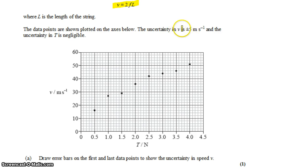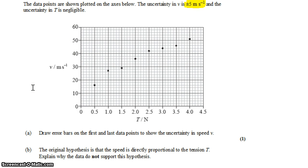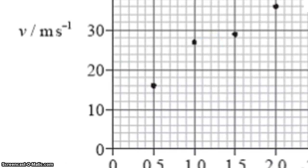We're told that the uncertainty in velocity is plus or minus 5 meters per second, and the uncertainty in tension is negligible. The first thing we need to do is draw error bars on the first and last points to show the uncertainty for V. We're told it's plus or minus 5 meters per second, so we just need to add plus or minus 5 meters per second to each one of these points. Taking a look at the scale, the major divisions go from 10 to 20 meters per second, so each division is going to be 2 meters per second.